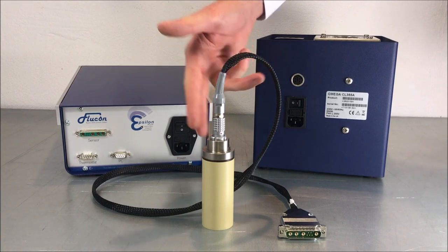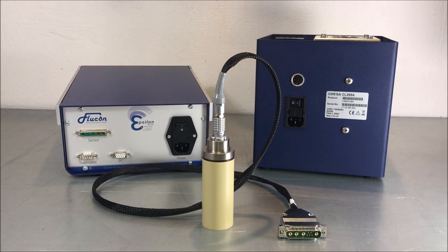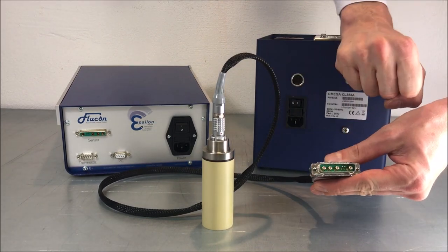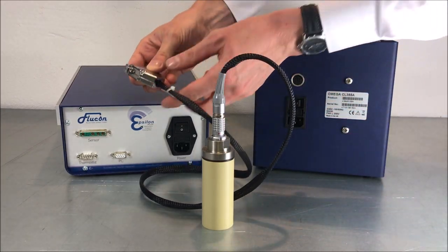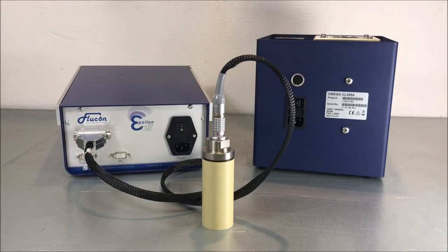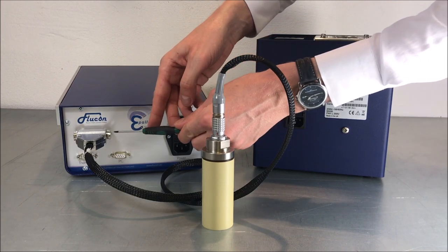In order to connect the sensor to the Epsilon Plus device, plug in the large plug into the sensor socket with its wider side up. Use the additional screws to tighten the connection.